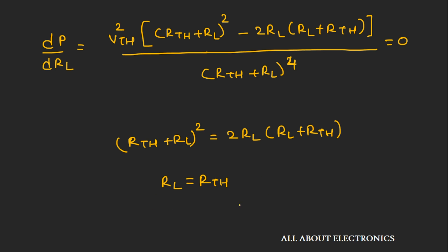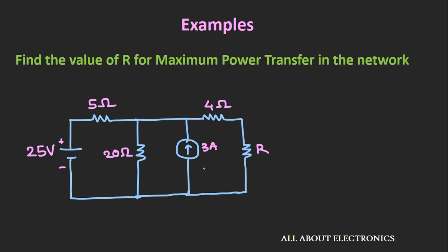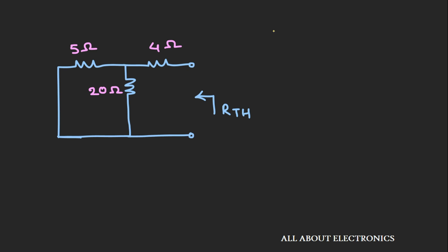Now let's see some examples based on this maximum power transfer theorem. In the first example, we have been asked to find the value of load resistance R for which the maximum amount of power will get transferred. The maximum power is transferred when R equals the Thevenin's equivalent resistance of the network. To find this, we remove the load and turn off all independent sources — the voltage source gets short-circuited and the current source gets open-circuited. The Thevenin's equivalent resistance is 5 ohm in parallel with 20 ohm, plus 4 ohm in series, giving 4 + 4 = 8 ohm.